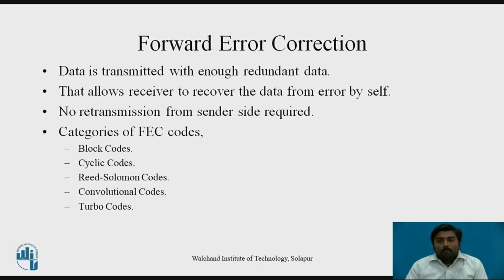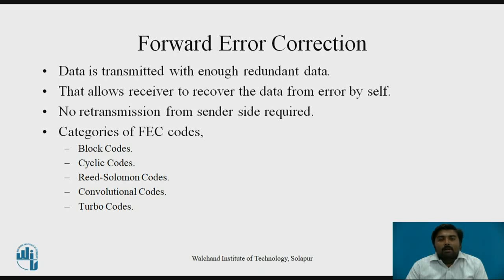What is meant by forward error correction? While transmitting data, some extra bits called redundant bits are added. This allows the receiver side to detect errors and correct them by itself, with no need for retransmission of data from the sender side. The receiver is capable of recovering the data from errors because of those extra redundancy bits.